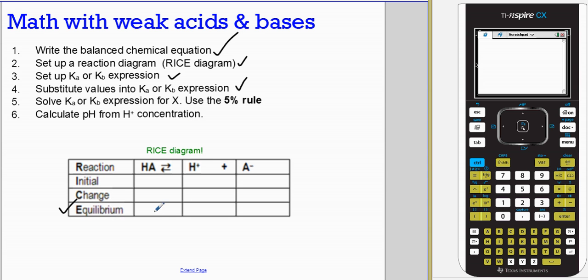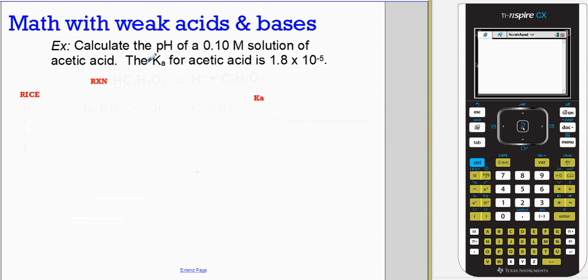This is an example RICE diagram with our acid intact, and then our ions forming. Initial concentrations, the change we expect, and equilibrium. Let's look at an actual example. Calculate the pH of a 0.1 molar solution of acetic acid. Ms. Horne's class titrated with acetic acid, so you already worked with a weak acid. But understand that just because you have a 0.1 molar solution doesn't mean that all that 0.1 molar is going to form hydrogen ions. That's where Ka comes in. This value tells us the degree to which we form hydrogen ions. So let's embrace the process, see what we find.